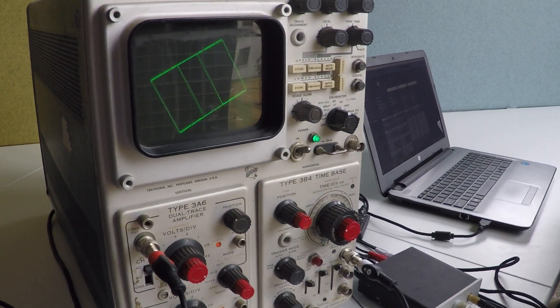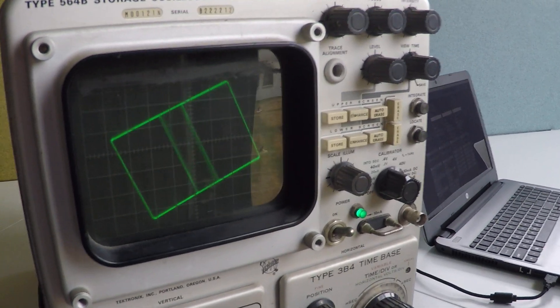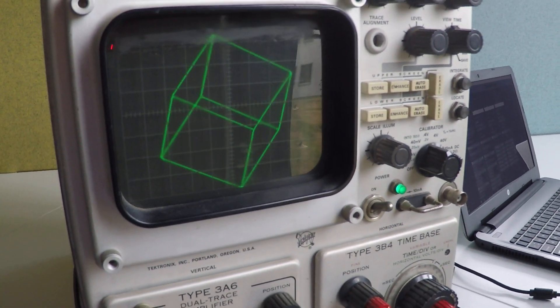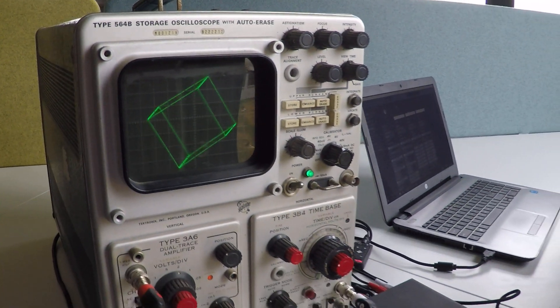This is a type 564B storage oscilloscope made by Tektronix. I believe it's one of the earlier models as it still uses vacuum tubes, while later models are full transistor.